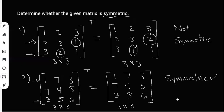In conclusion, symmetric just means that if you take the transpose, you get the same matrix back. And that is all about symmetric matrices.